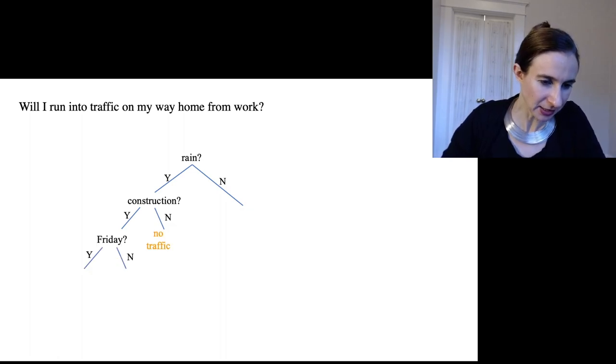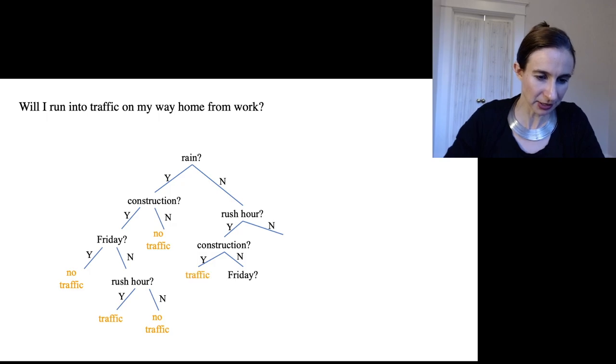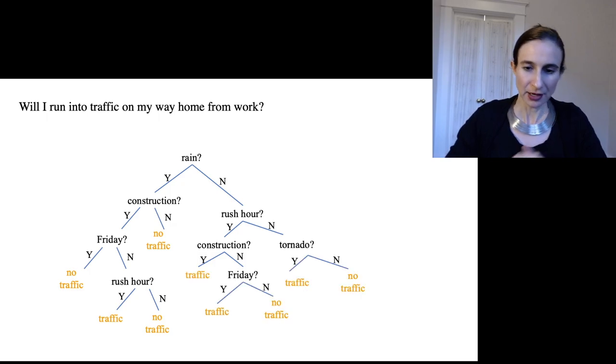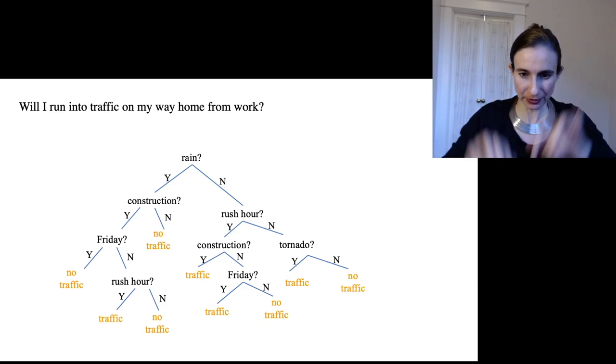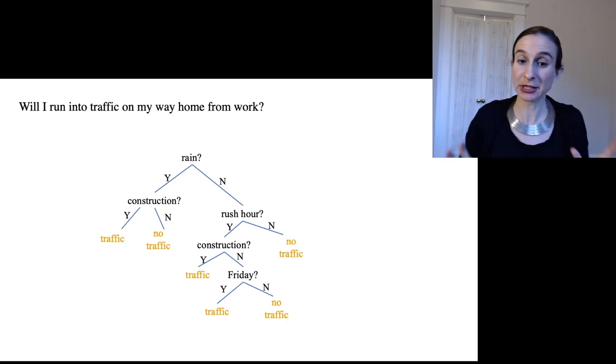So then we keep doing this and we grow the tree, all the way till it's done. And then once the tree is grown, we'll greedily prune it back up. We'll greedily prune pieces of it back up to try to make the tree smaller so that it is less likely to overfit.